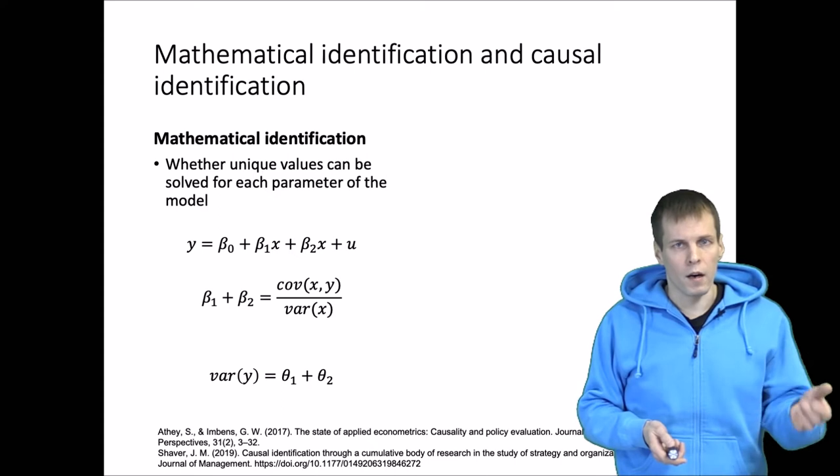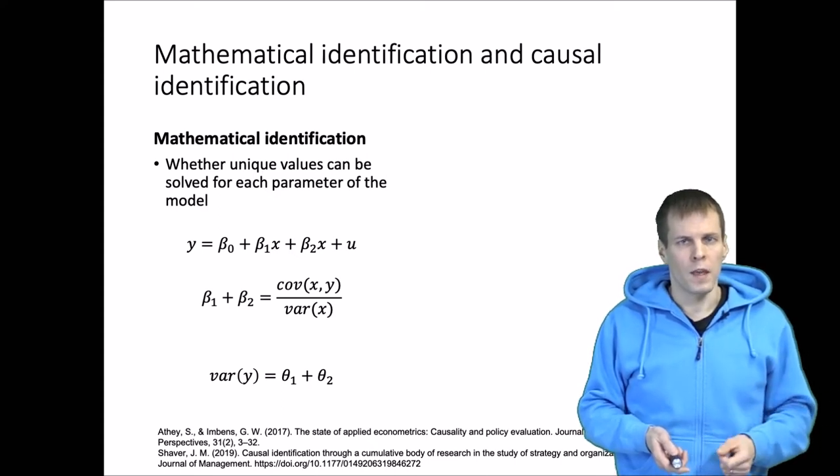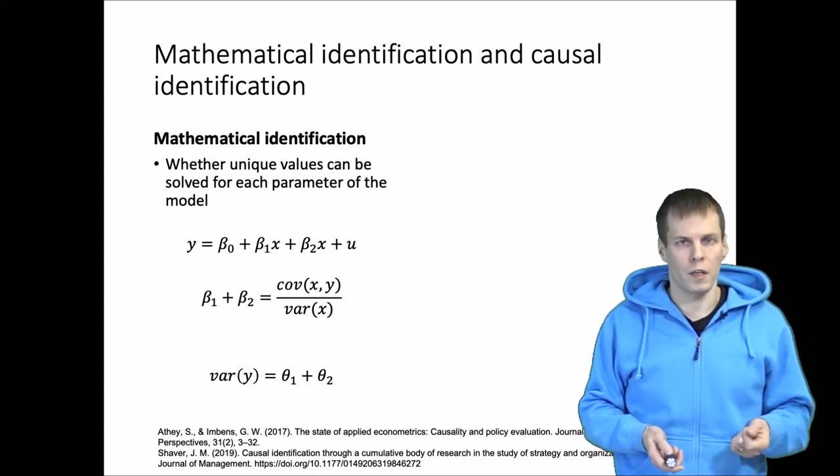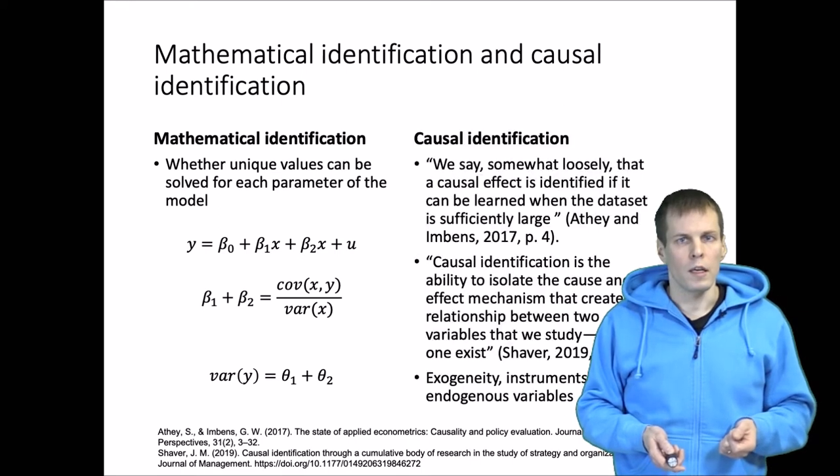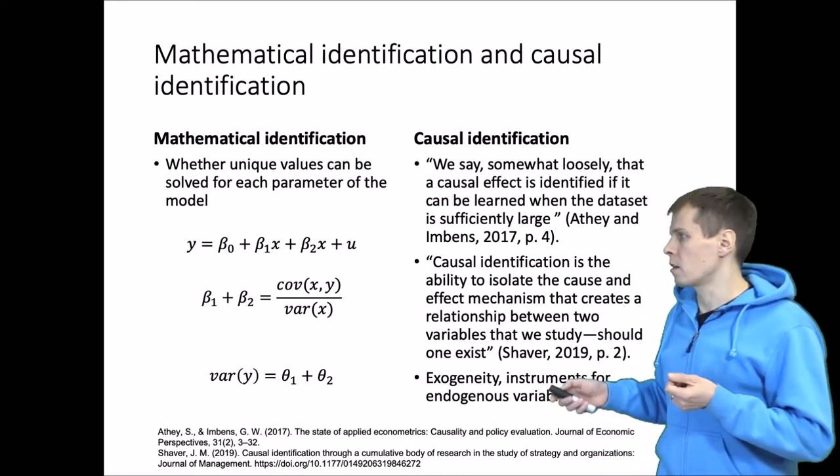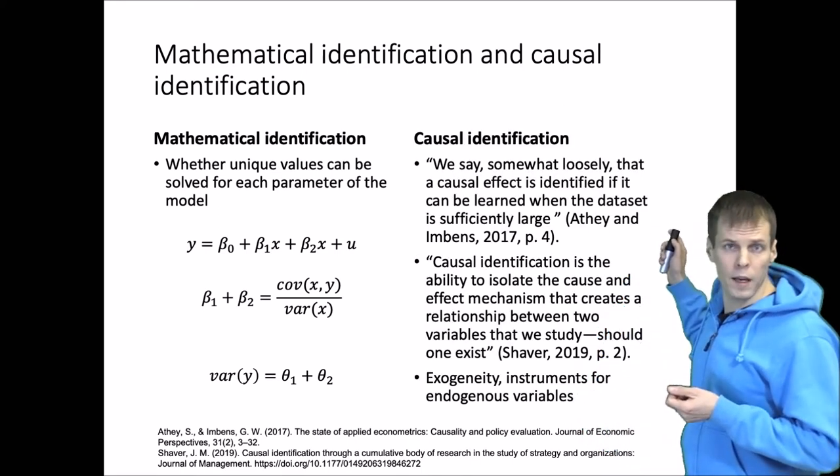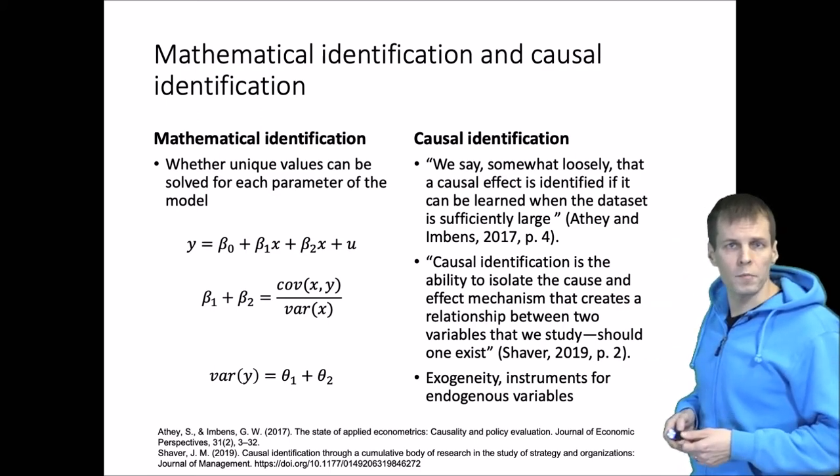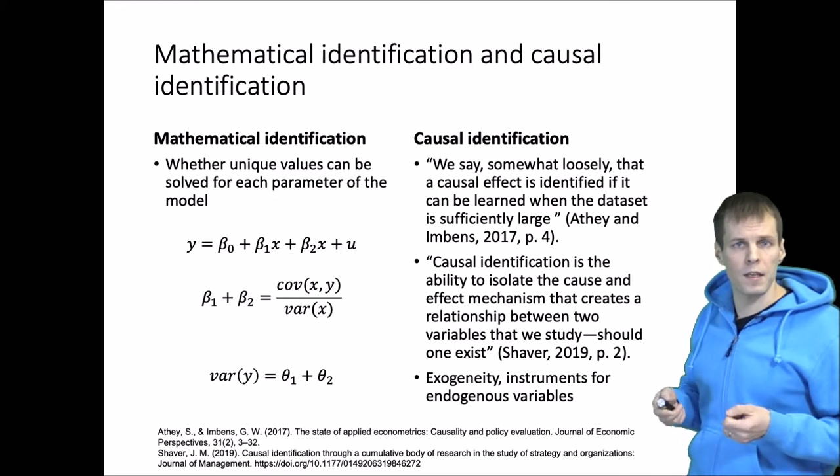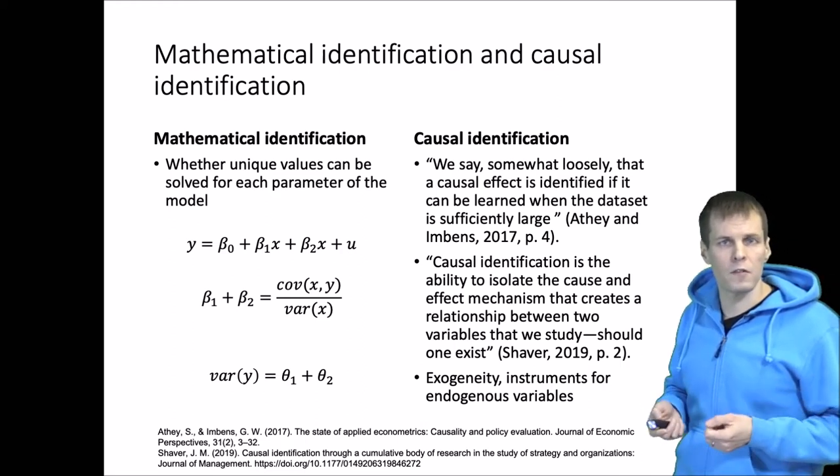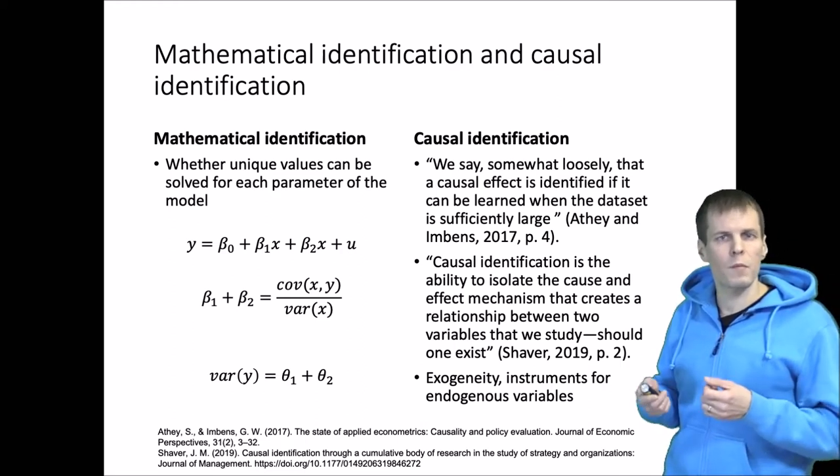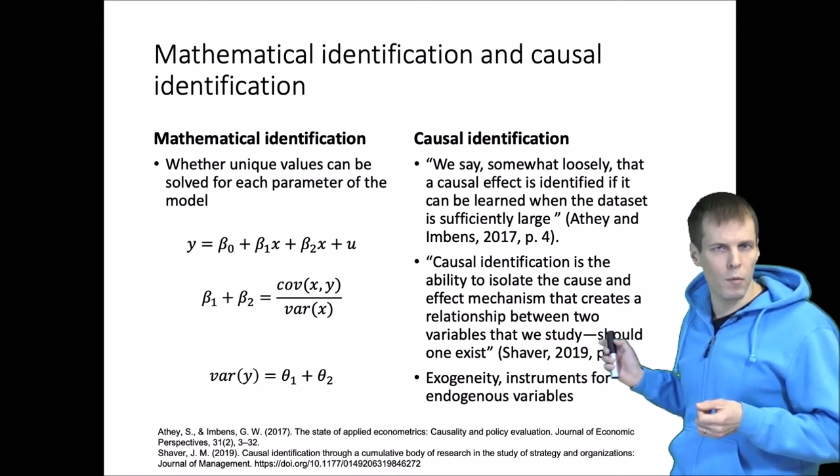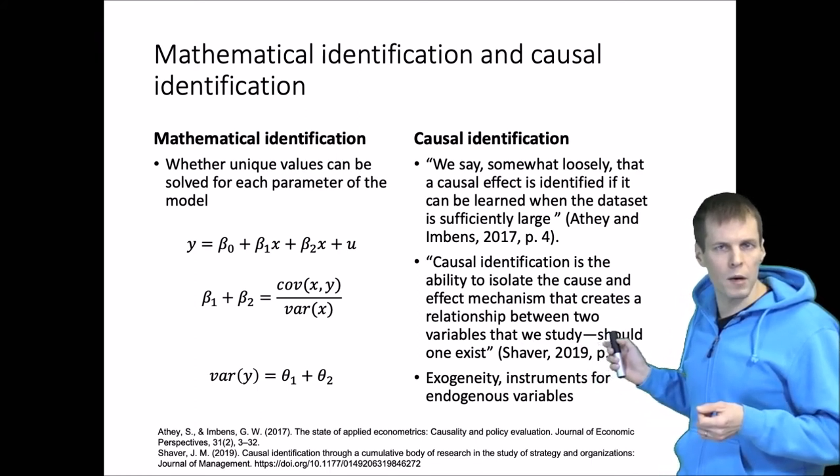That's mathematical identification. Another context where the term identification appears is causal identification, which refers to whether our research design provides sufficient evidence for a causal claim. This is something different. This is not a mathematical problem, it is a research design problem.